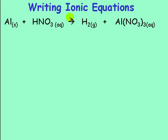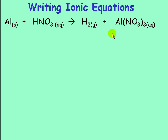This video is about writing ionic equations. We're starting off with what's called a formula equation. This is what happens when aluminum is put in nitric acid — we get hydrogen gas and aluminum nitrate.